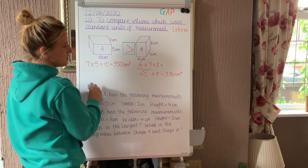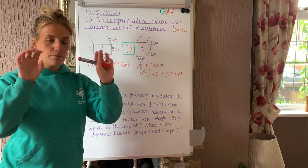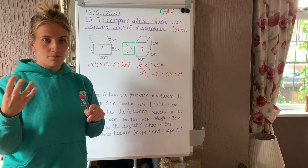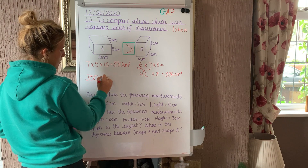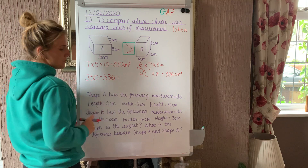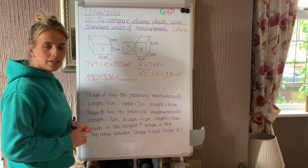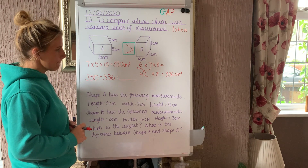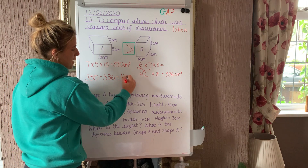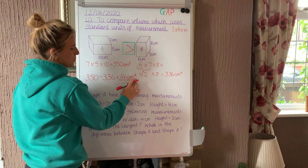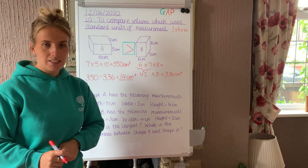Sometimes you might be asked to calculate the difference. When we calculate the difference between two numbers, we do the largest number take away the smallest number. So 350 take away 336. The difference would be 14 centimetres cubed. The difference between shape A and shape B is 14 centimetres cubed.